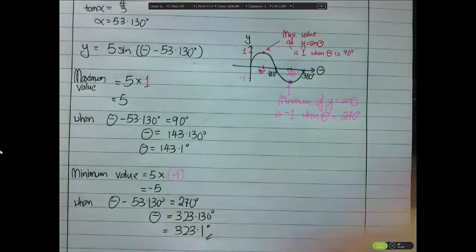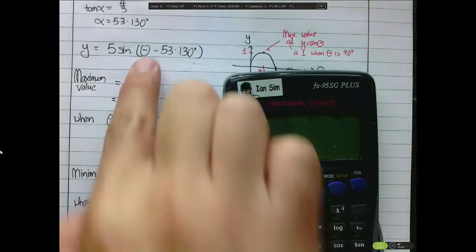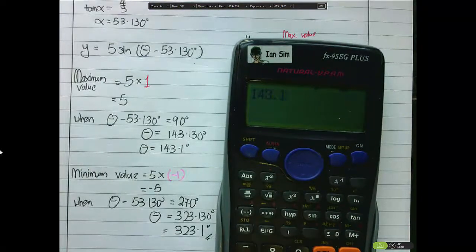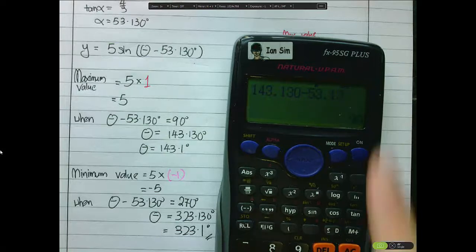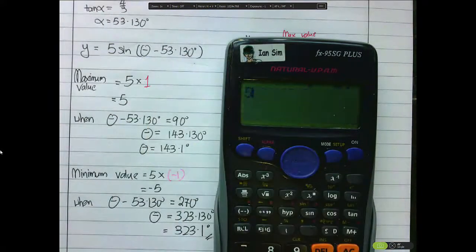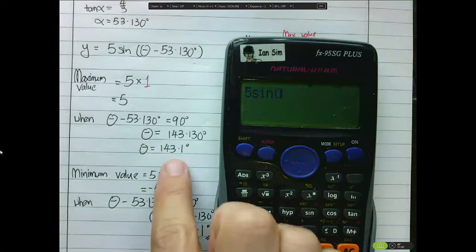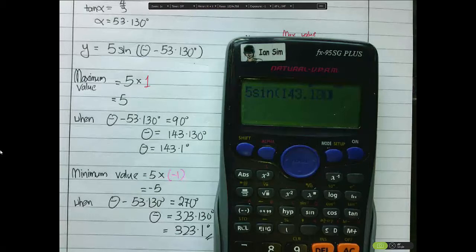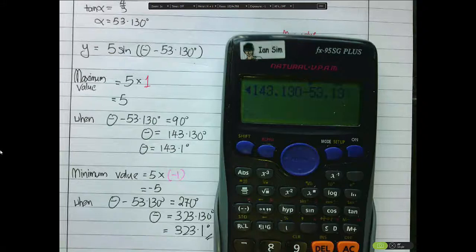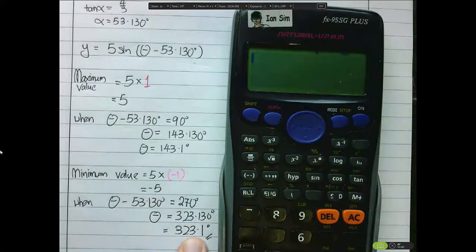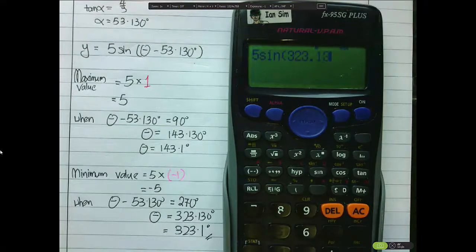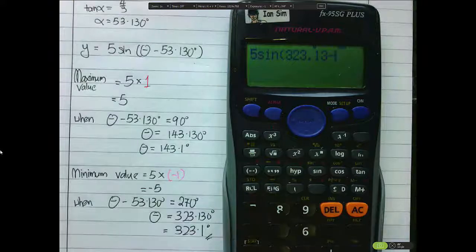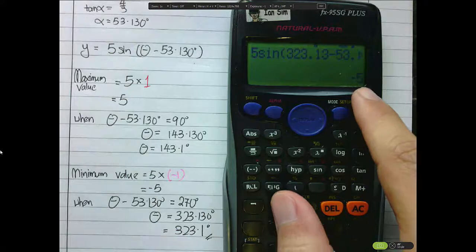To verify: substituting θ = 143.1° gives 5·sin(143.130° - 53.130°) = 5·sin 90° = 5. And substituting θ = 323.130° gives 5·sin(323.130° - 53.130°) = 5·sin 270° = -5. Maximum value and minimum value confirmed.